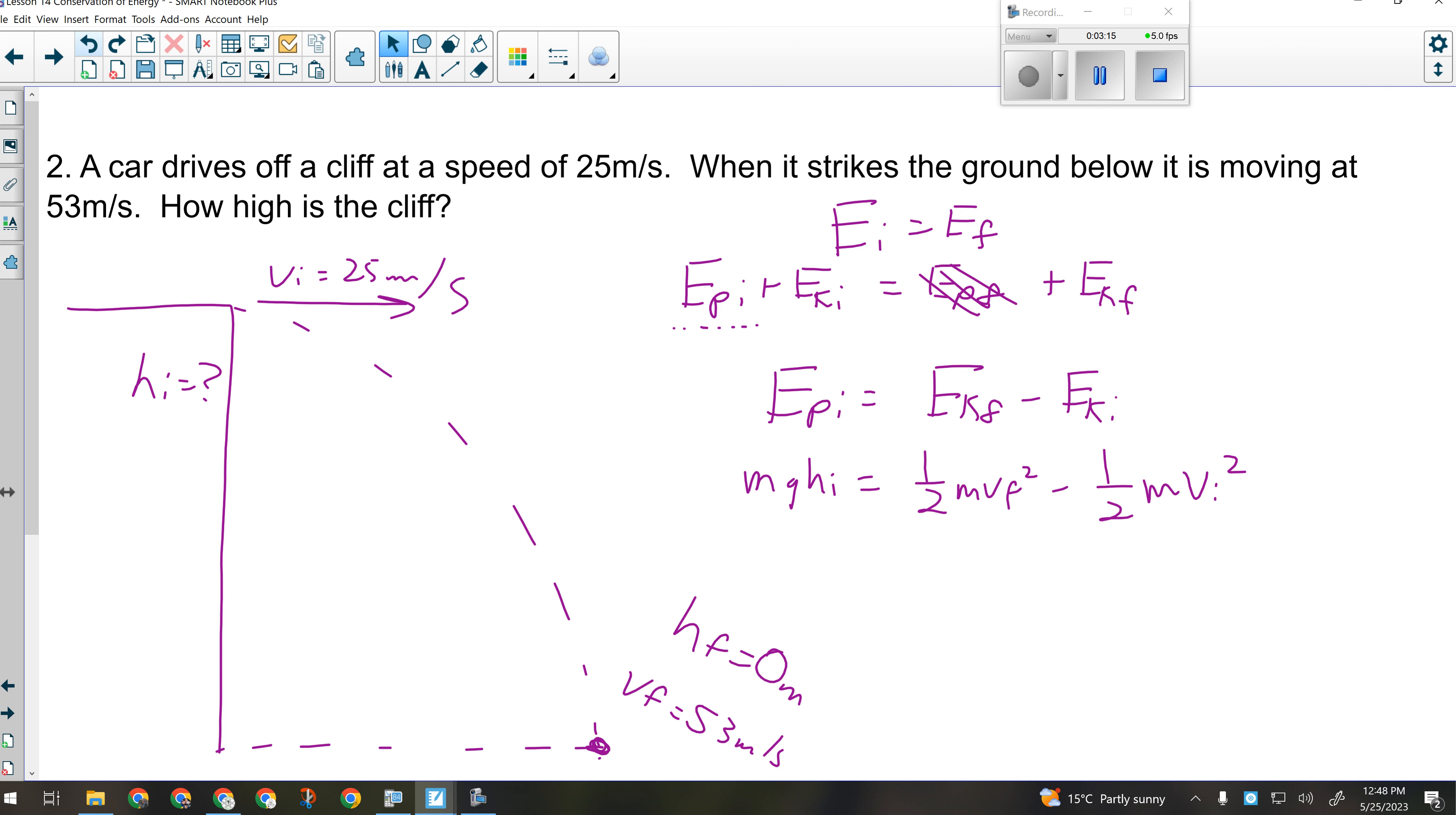All right. Then I put in my formulas, M times G times H initial equals one-half M V final squared minus one-half M V initial squared. So I'm trying to find H I. What can I do with all the M's right now? Cross them off. I can cross them off, which is good because they didn't tell me the mass of the car. So now I want to get H I by itself. What do I do with G? Divide it.